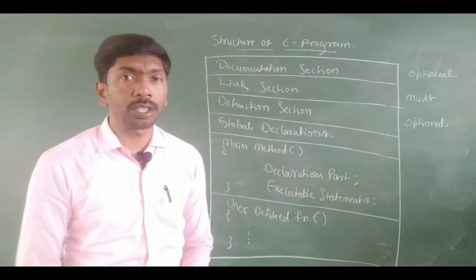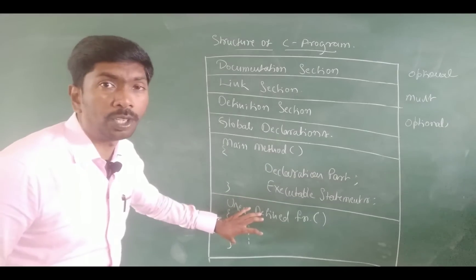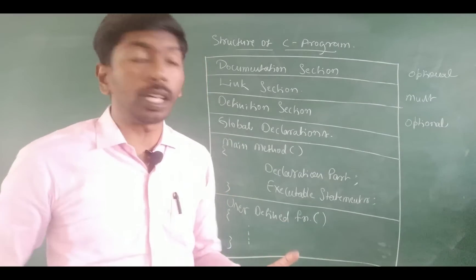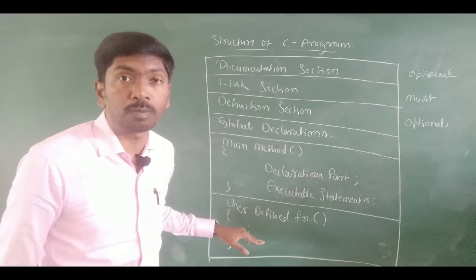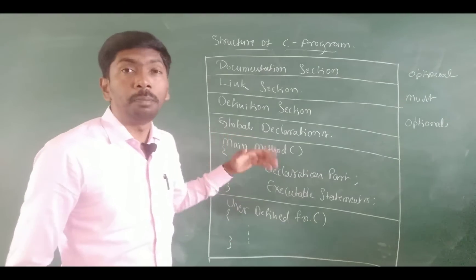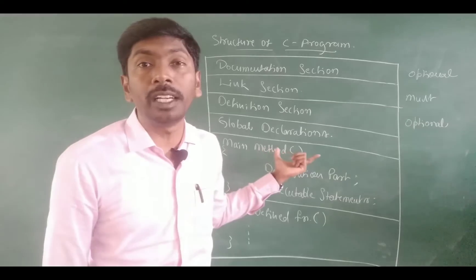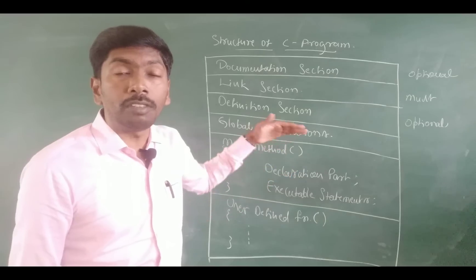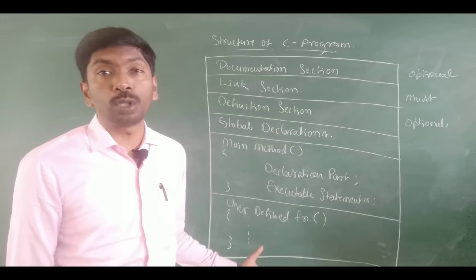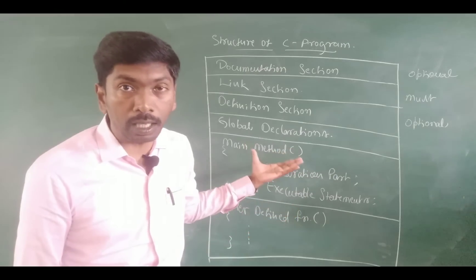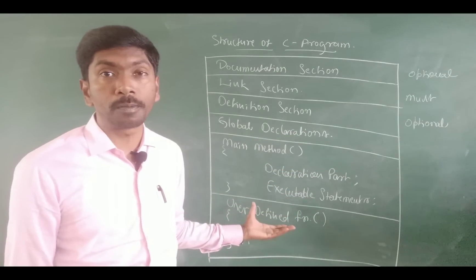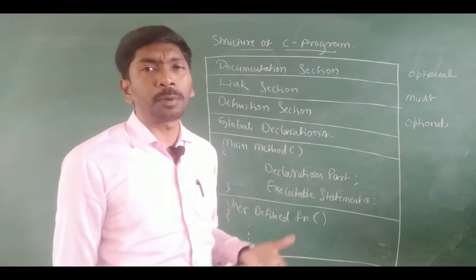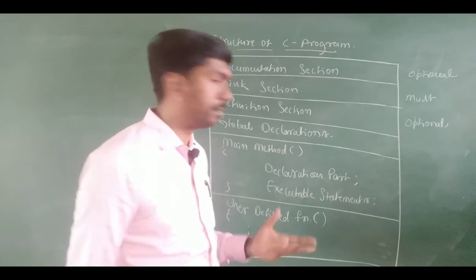Next is global declaration. What is global declaration? If a variable is used in both the main method and user defined functions, we declare that variable before the main method. Global declaration means variables declared that will be used in the entire program. This section is also optional depending on program requirements.